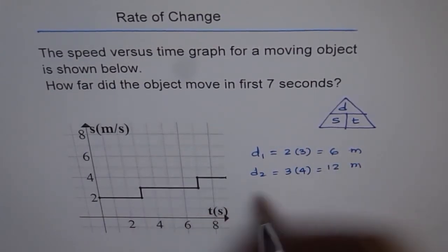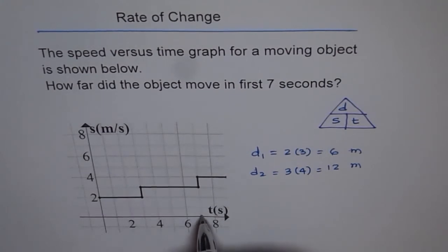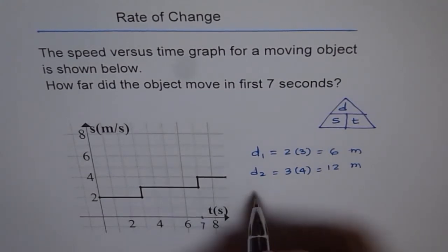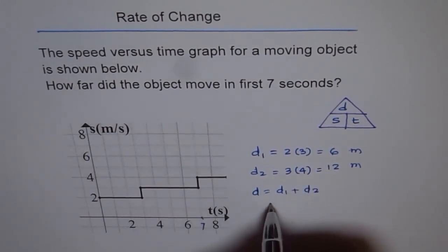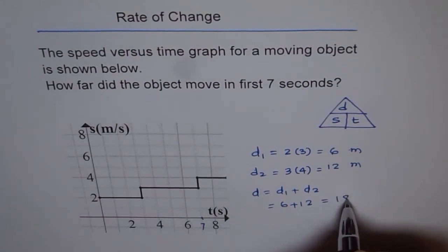So the total distance from zero to seven seconds will be D1 plus D2, which is six plus twelve, which is eighteen meters.